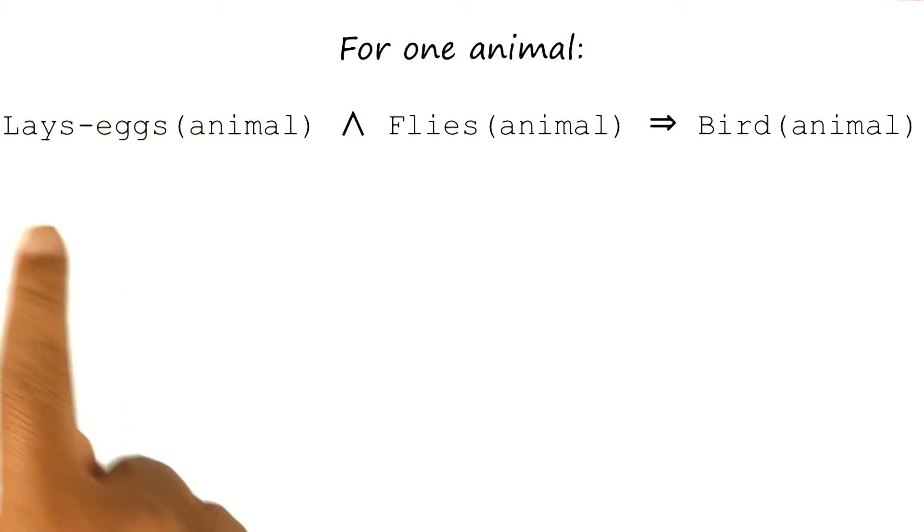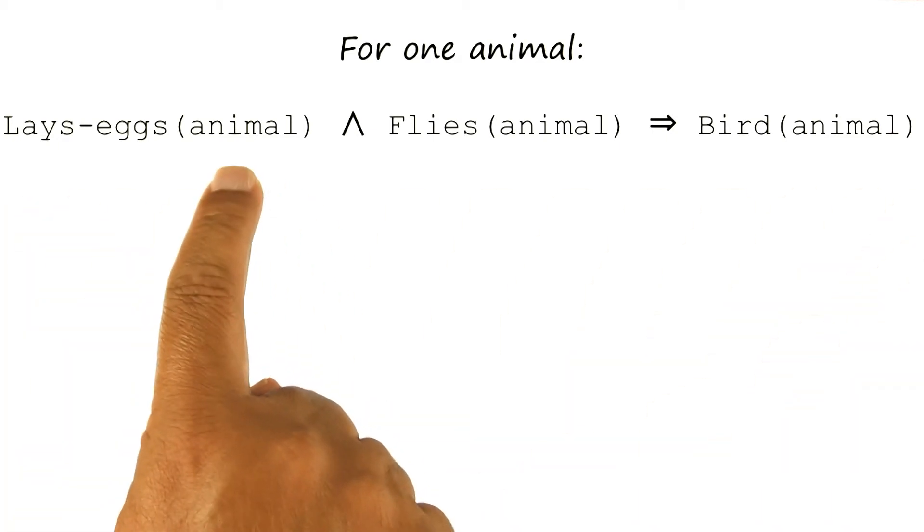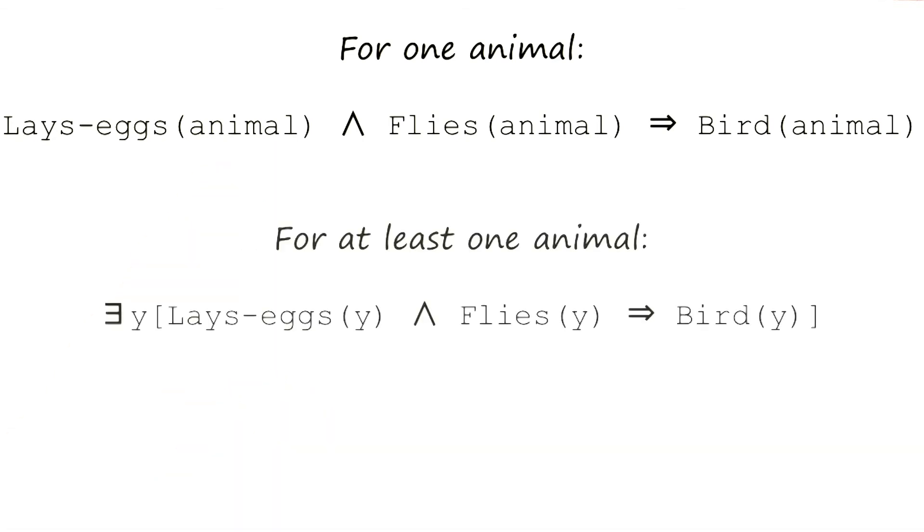So consider again this sentence. Here the animal is referring to a specific animal. Now let us look at the second sentence on the screen. And this sentence has the variable y. It says that if y lays eggs and y flies, then it implies that y is a bird. This sentence is a very similar form to the previous sentence except for the variable y.